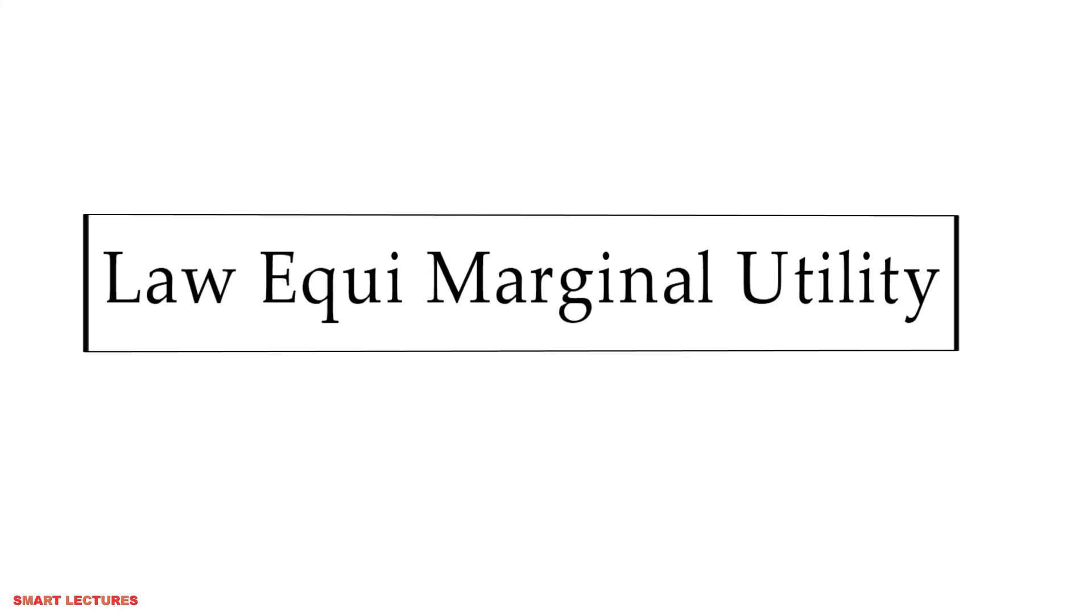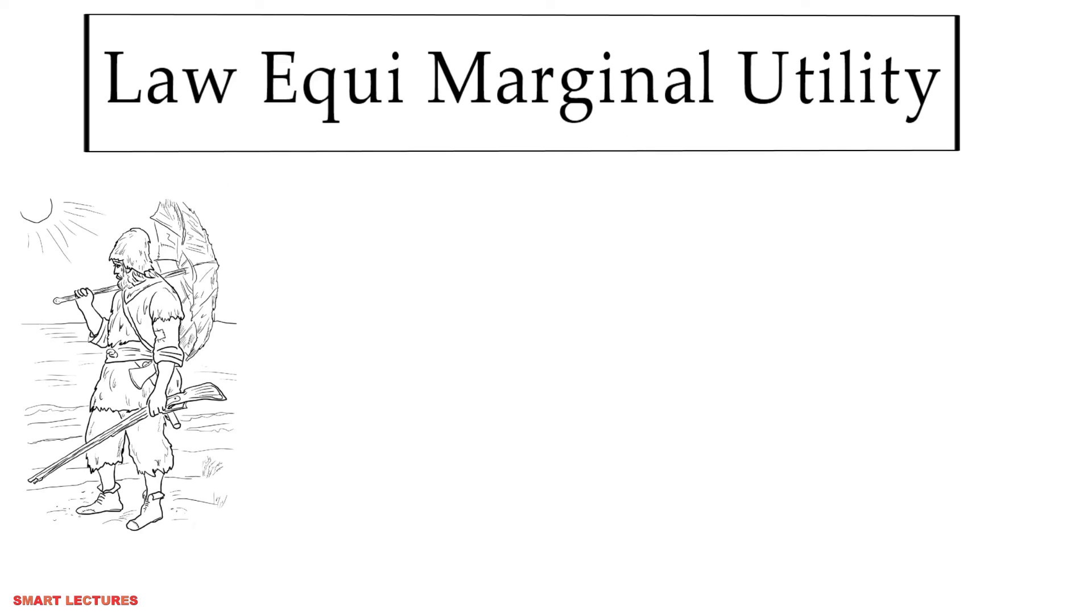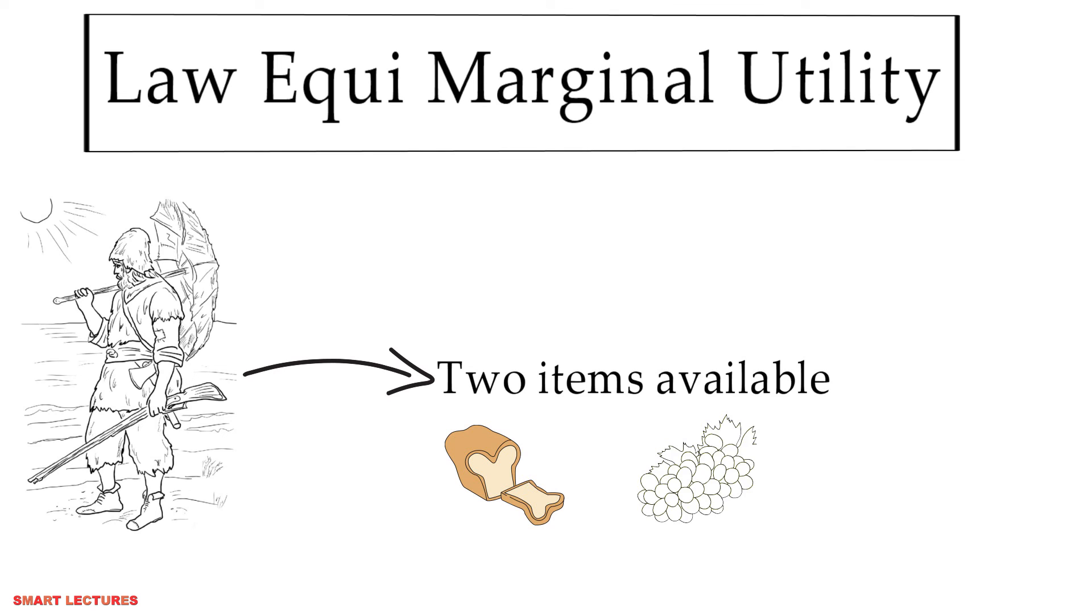Now let's learn the basics of law of equi-marginal utility. In the law of equi-marginal utility, there are two goods. Let's take the example of Robinson. Suppose there are two items available to satisfy his hunger tonight: number one bread and number two grapes. So he has got two options.